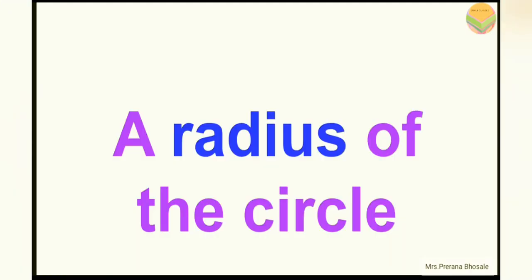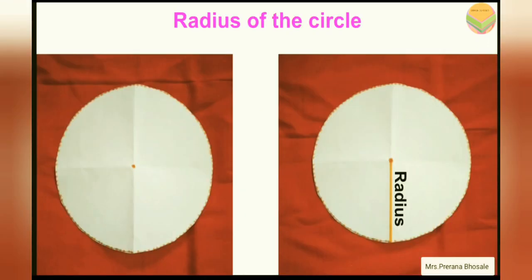Now let's see what is a radius. If you draw a line from the center of the circle to any point on the circle, you will get a radius of the circle. Thus, a circle has an infinite number of radii, but the length of each radius is the same. The radius is always half of the diameter.